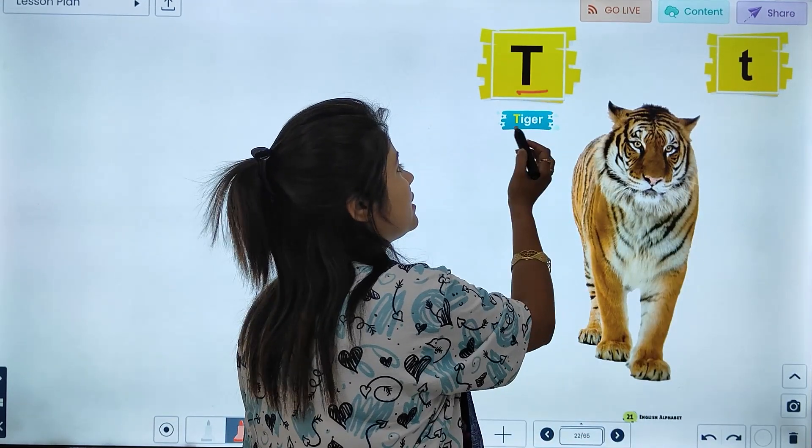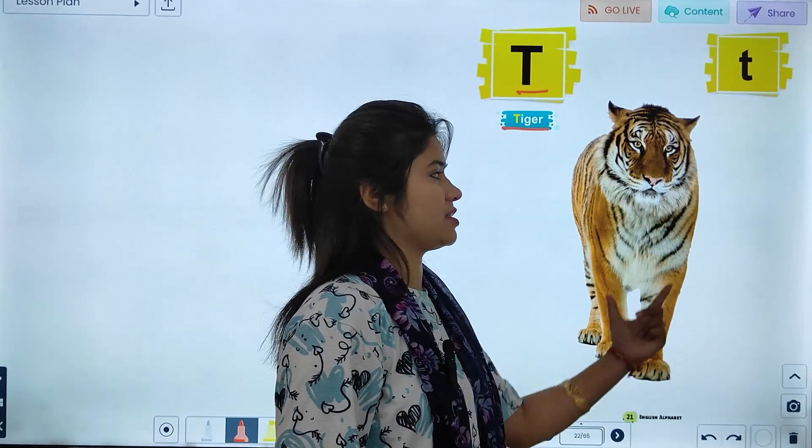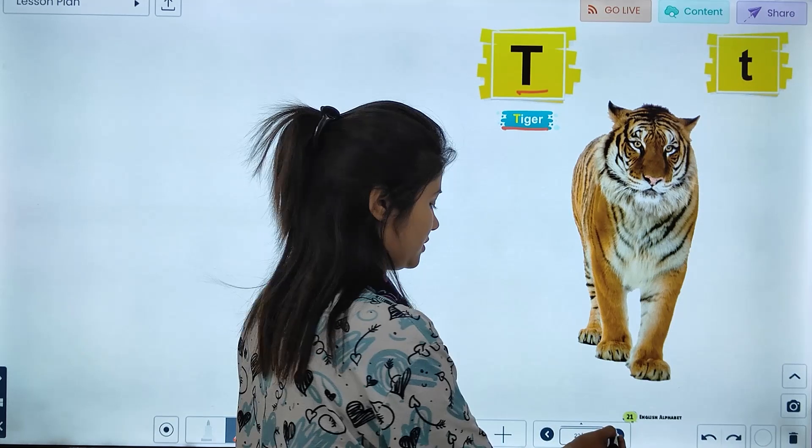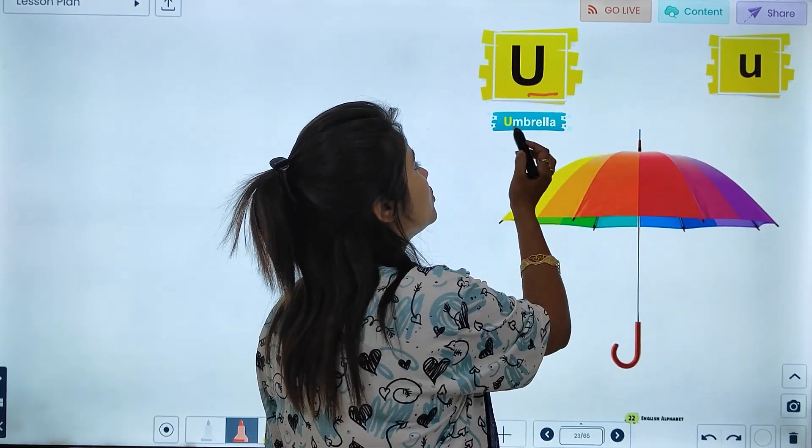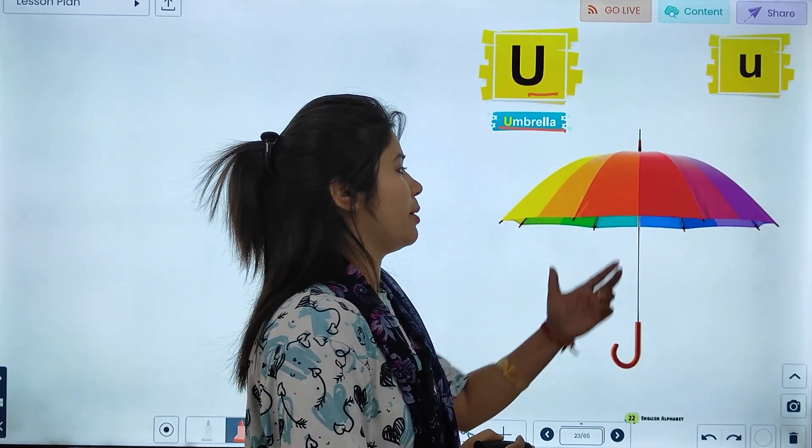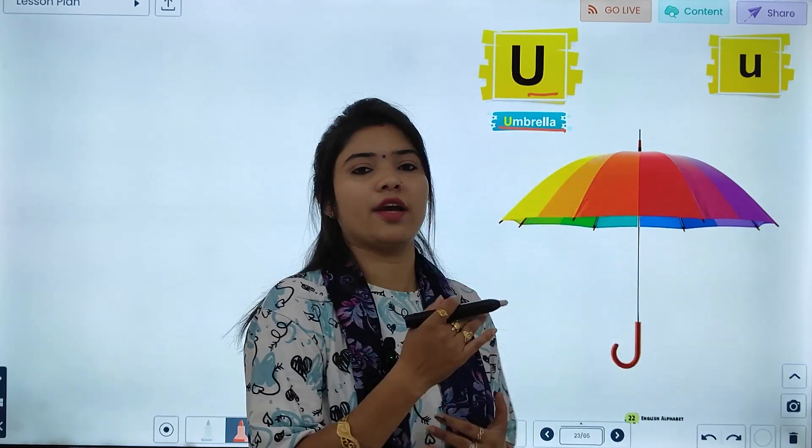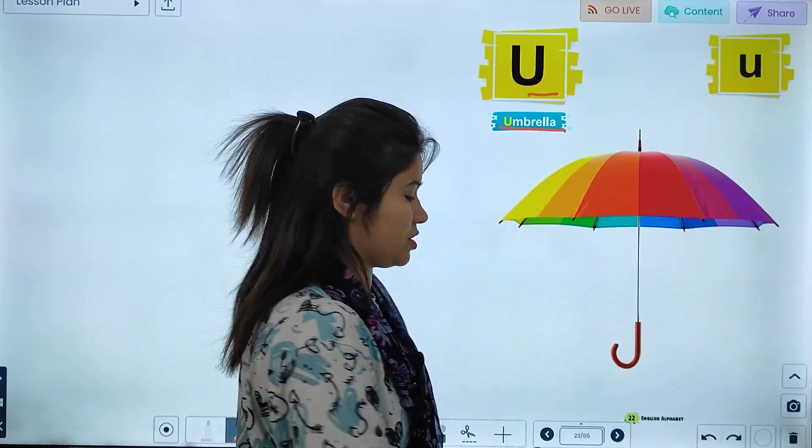Next is T, T for Tiger. What picture is this? Tiger. T for Tiger. U, U for Umbrella. What picture is this? Umbrella. That means the word Umbrella starts with which letter? U.